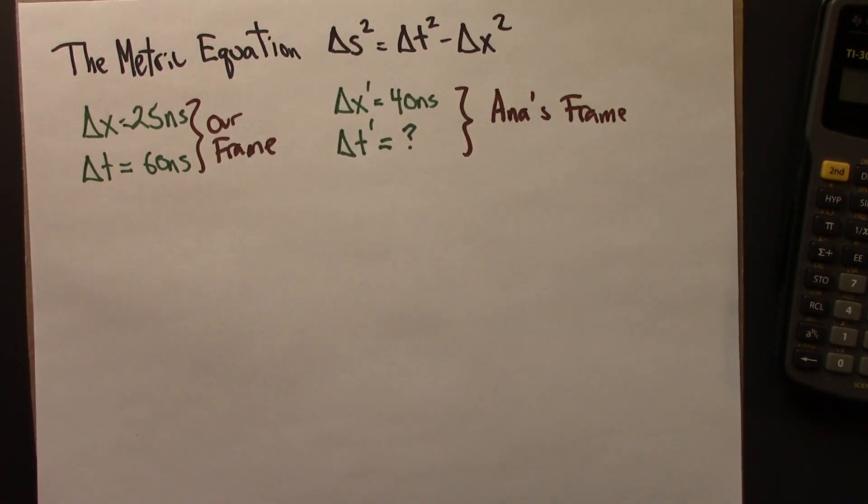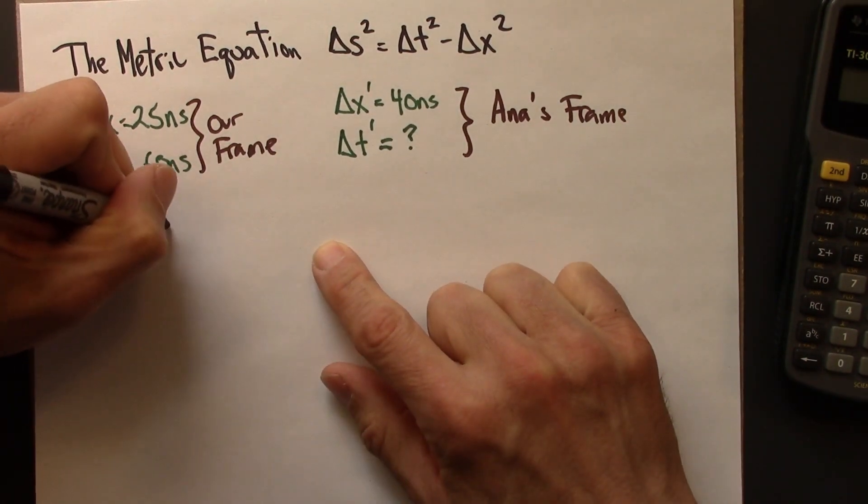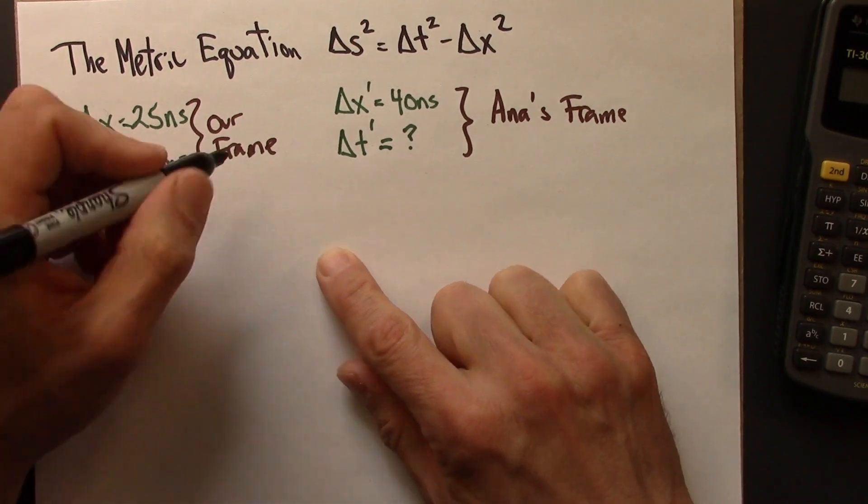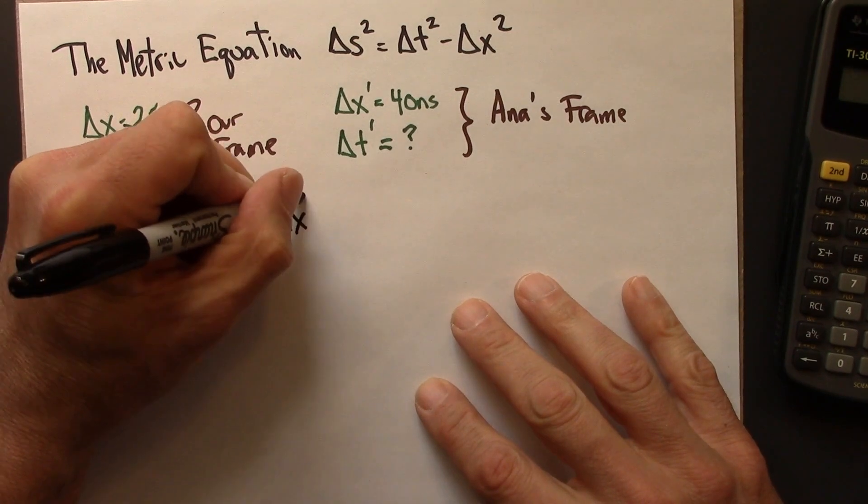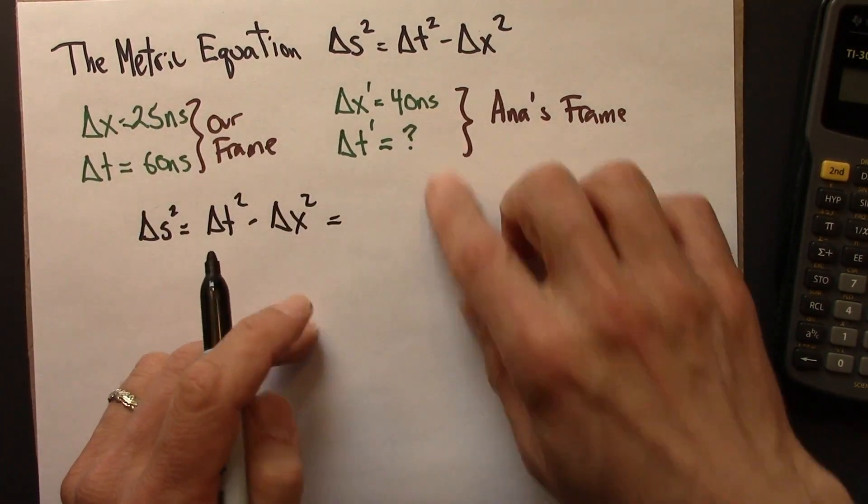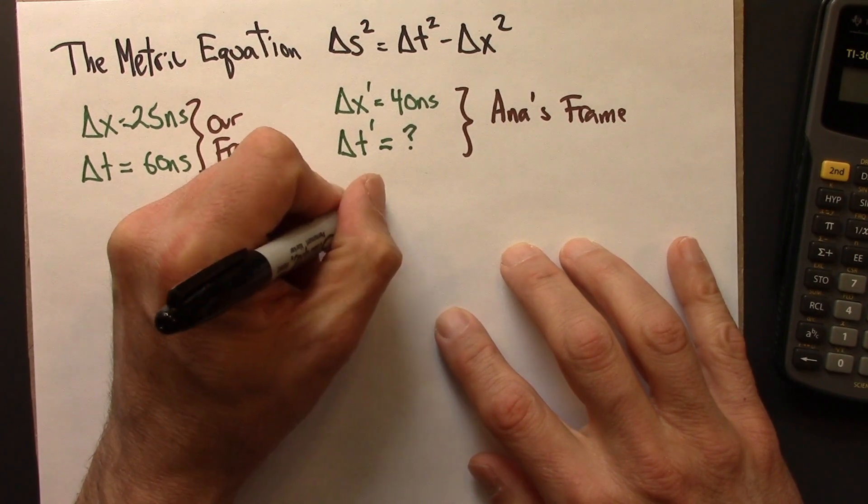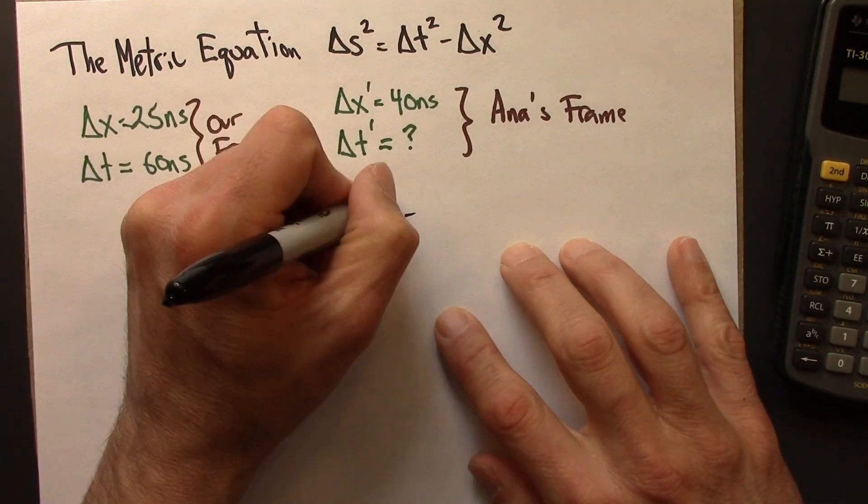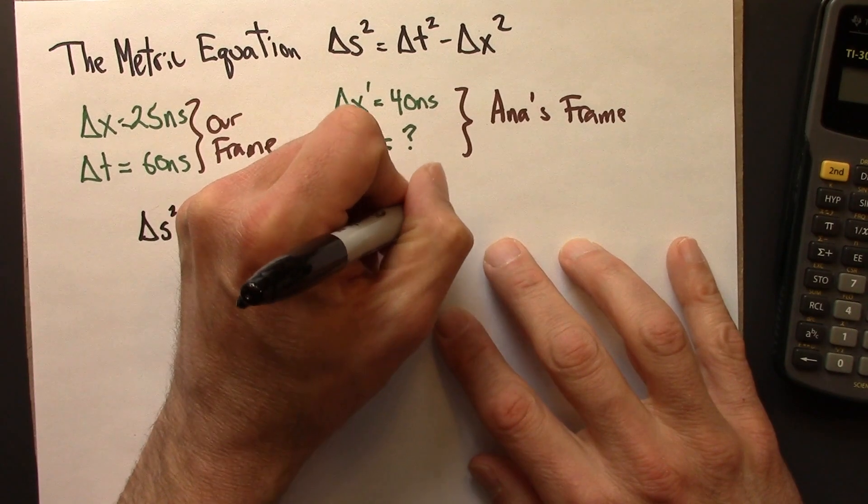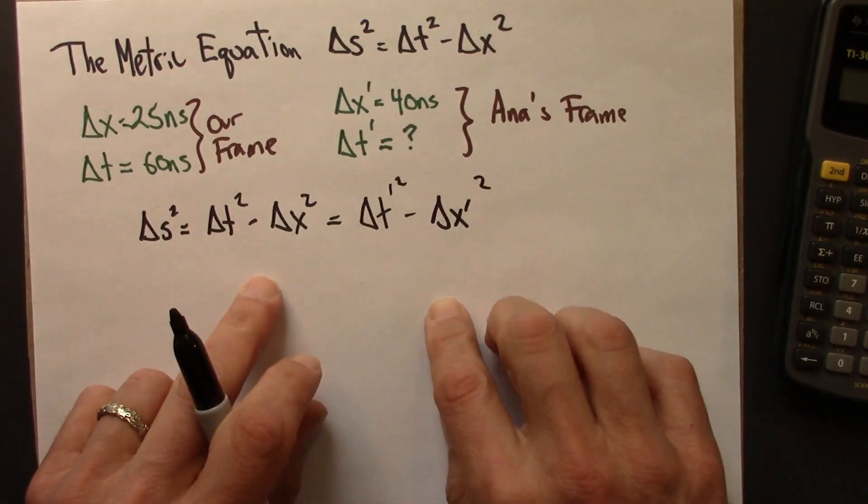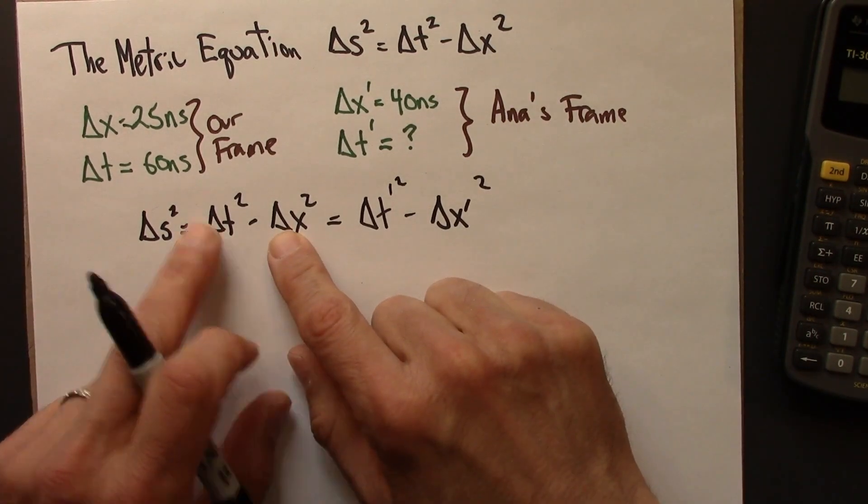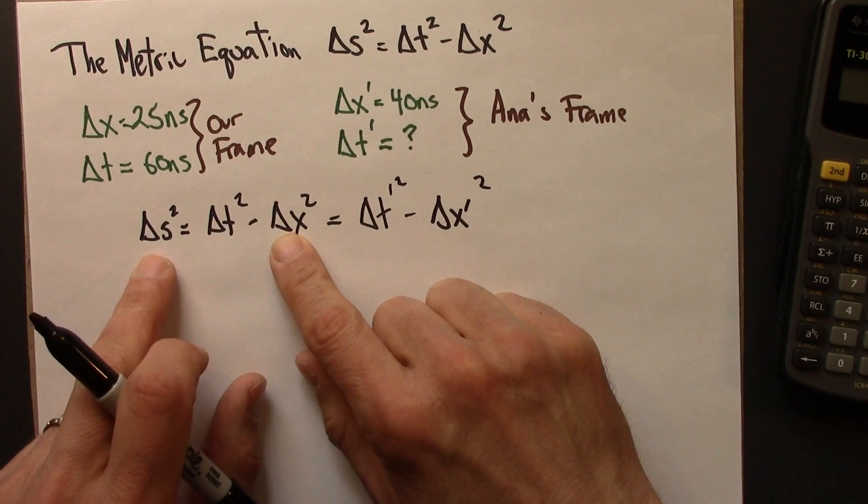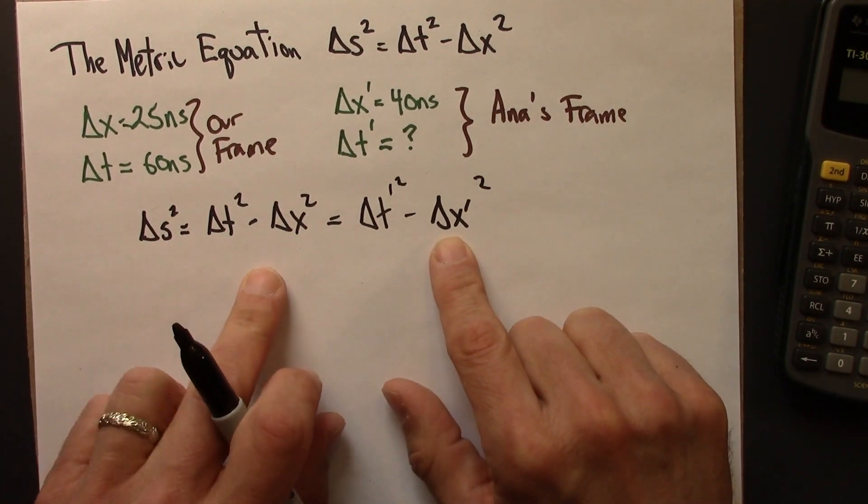So what that tells me is that the spacetime interval, that could be delta t squared minus delta x squared, but that also has to be delta t prime squared minus delta x prime squared. So this is the spacetime interval how Anna would calculate it. This is the spacetime interval how we would calculate it. But it's the same spacetime interval, so these two things have to be equal.